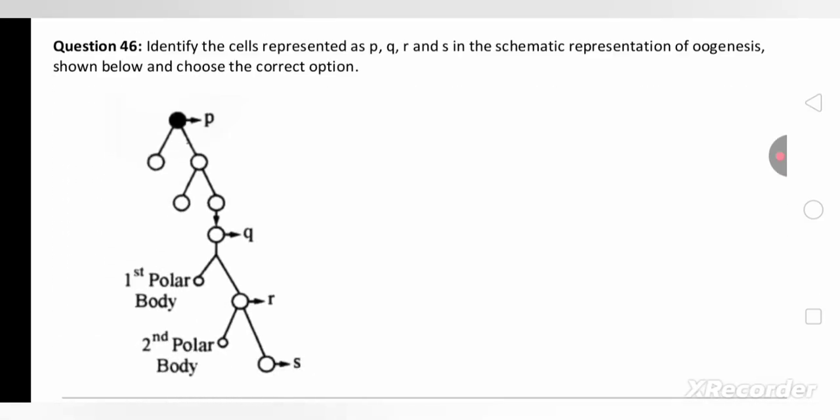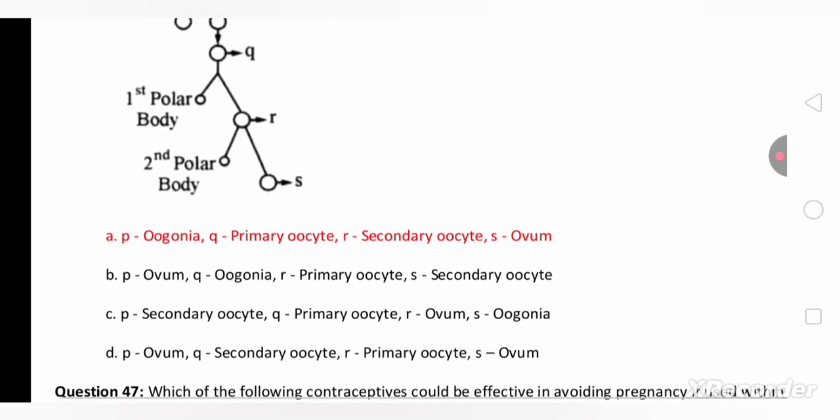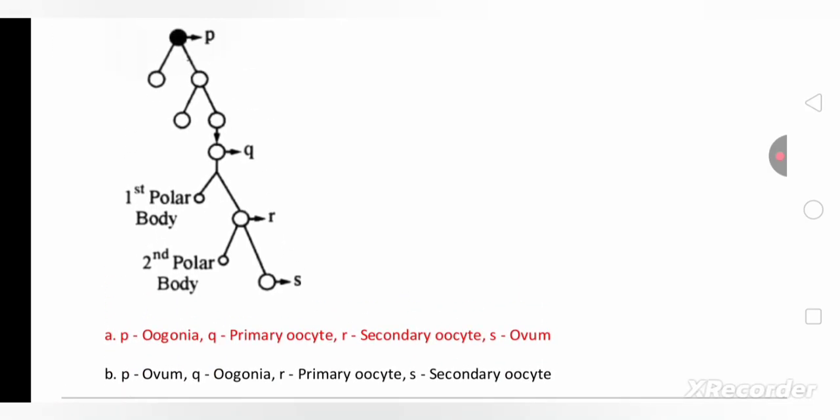Next: identify the cells representing P, Q, R and S in the schematic representation of oogenesis given below. Choose the correct option. So here P is oogonia, Q is primary oocyte, R is secondary oocyte and S is ovum.